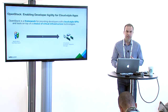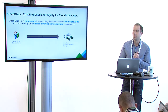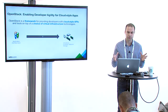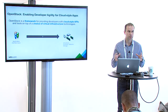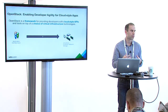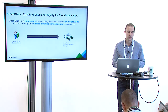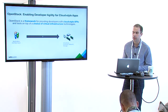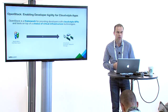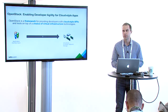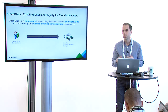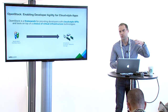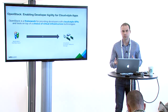Let's start by providing a definition for what OpenStack is. OpenStack is a framework for providing developers with a cloud-style API on one end and on the other end, providing you with a choice of virtual infrastructure. So you're basically getting an API on one side and you're getting a choice of technologies that you want to put underneath, VMware being one of them.